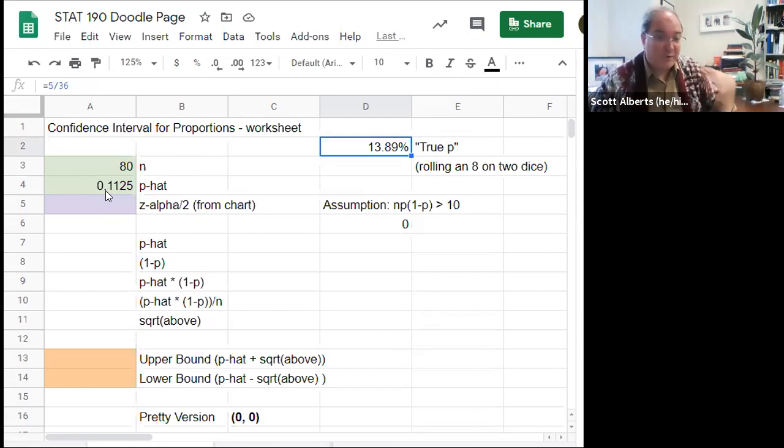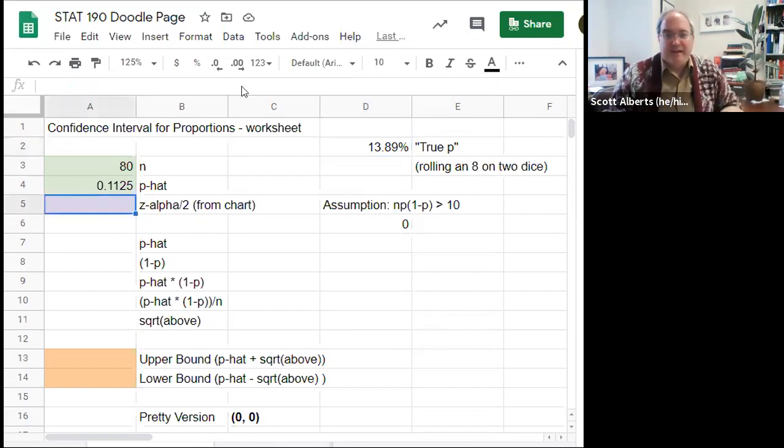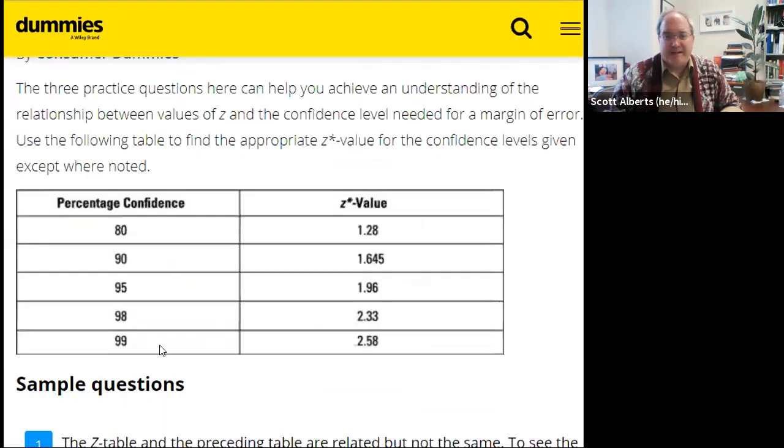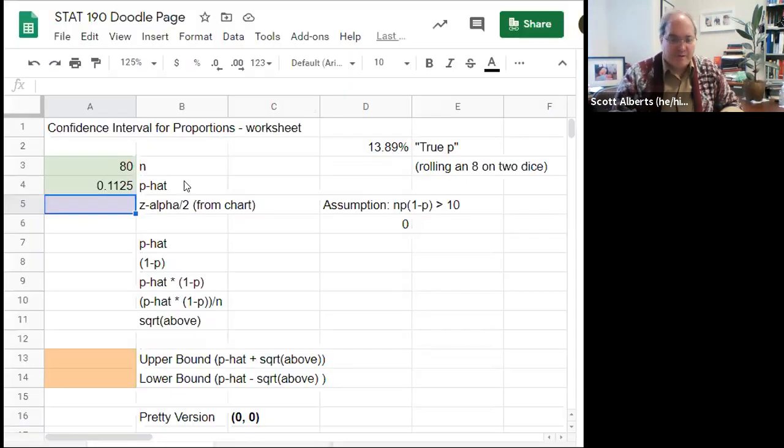Remember our true proportion over here was my true proportion is 13%, that is 5 out of 36. That's what we calculated back before for what the dice should be. We got 11 and a quarter percent. So the question is, is that a reasonable estimate? Is 13.89 an accurate thing? Now thinking about it backwards, what would really happen in practice is 11.25 is all we know.